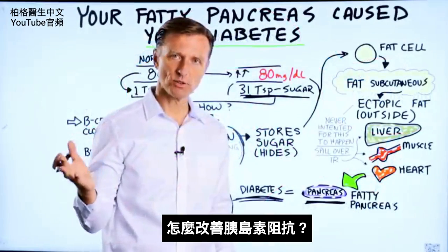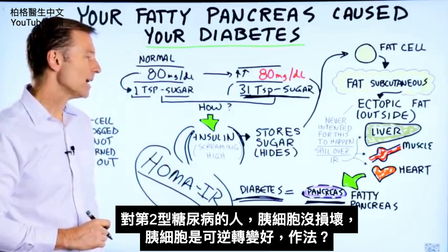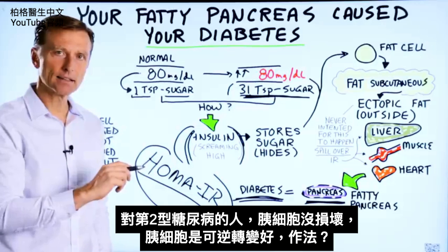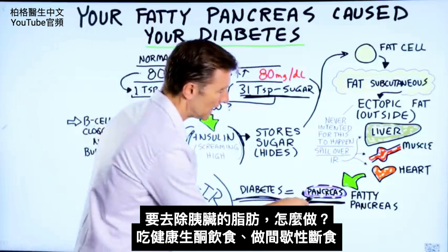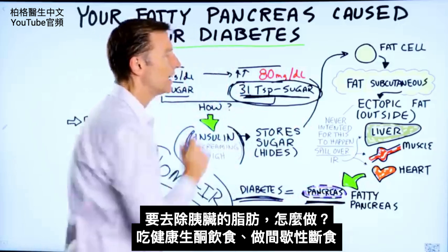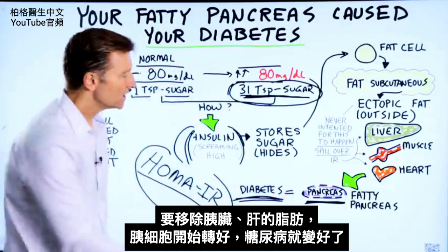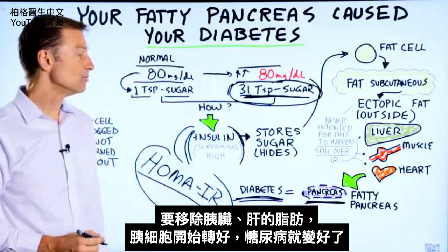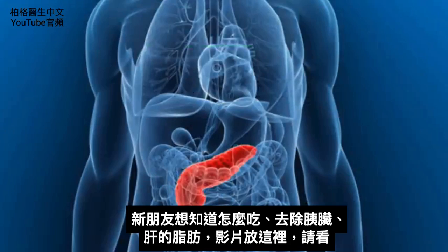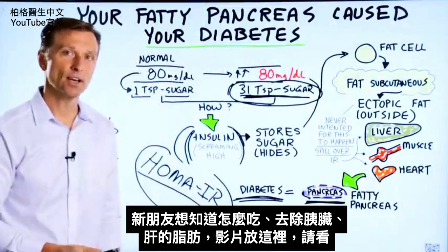So what do you do about it? The cool thing is, if you have type 2 diabetes, your pancreatic cells are not burnt out — they can be reversed, they can come back. If you remove the fat from the pancreas by going on a healthy keto plan and doing intermittent fasting, as that fat starts to come off those organs, the cells start to reverse and you no longer have diabetes. Check out the video linked here to learn what to eat to start taking the fat off the pancreas and the liver.